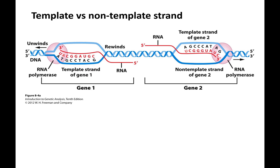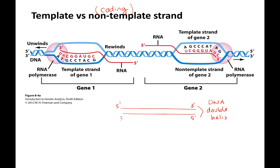The template versus the coding strand — the non-template — can be either strand of a DNA double helix. So when we draw our DNA we always draw two strands because it's a double helix. You can have genes that are read from either strand, and they're going to go in opposite directions because the DNA double helix is antiparallel. So one gene uses one strand, but for all the genes together, either strand could be used.